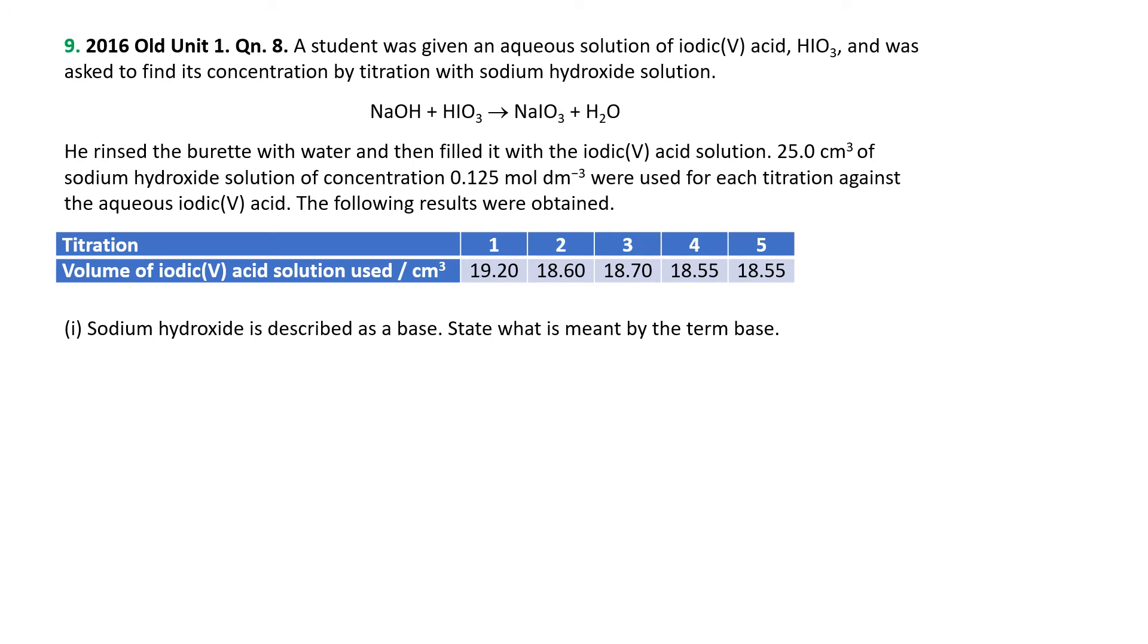Now I'm going to do a series of questions associated with titrations. We've got here a solution of iodic acid, iodic-5 acid, HIO3, finding concentration by titration with sodium hydroxide, and of course this is a monoprotic acid, so when you neutralize it with a strong base, it's a 1-to-1 reaction. Rinse the burette with water, filled it with the iodic acid solution, 25 mL of sodium hydroxide, concentration 0.125 we use for each titration. Now part one is just sodium hydroxide is described as a base, state what is meant by the term base. You're going to say proton or H+ acceptor, because that's what you were told about.